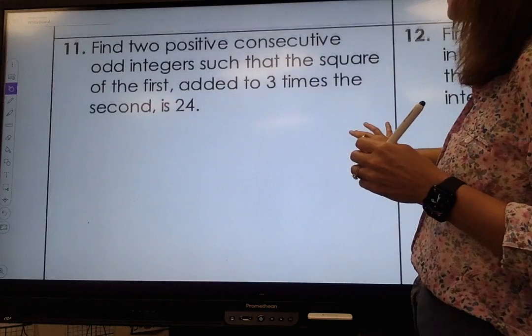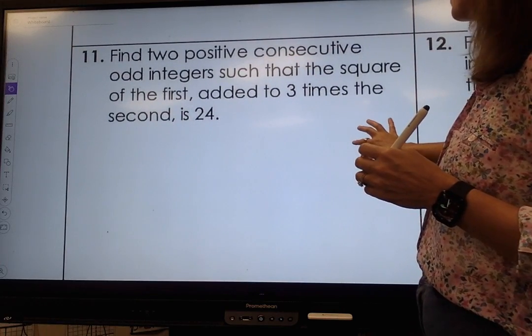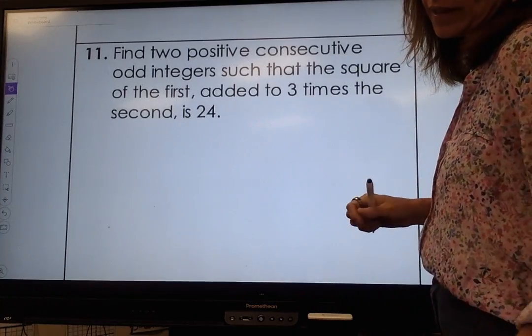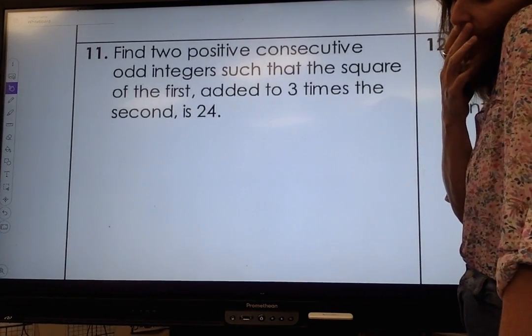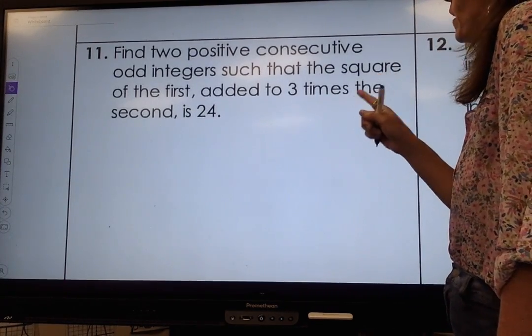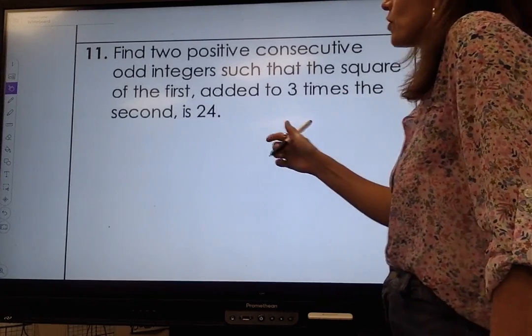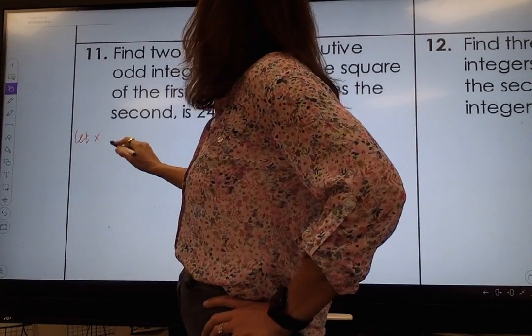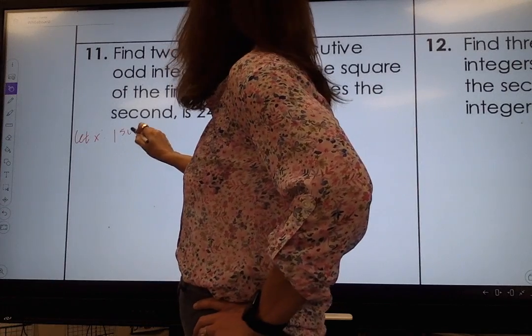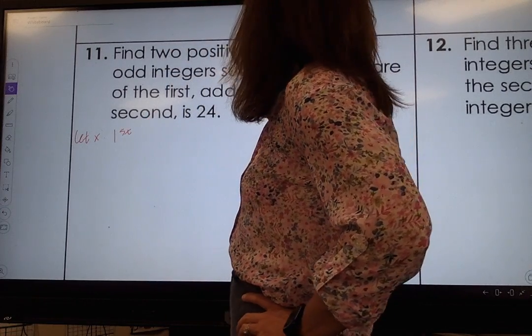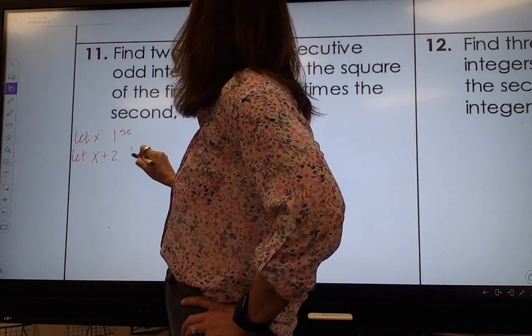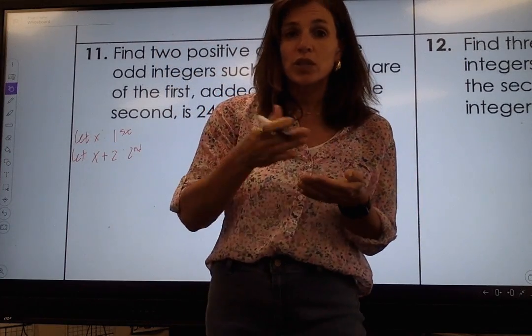Let's do another one. Let's do the one below it. This is a great one. It's saying find two positive consecutive odd integers. So I know I'm going to let x be my first integer and I'm going to let x plus 2 be my second integer because remember we're skipping.